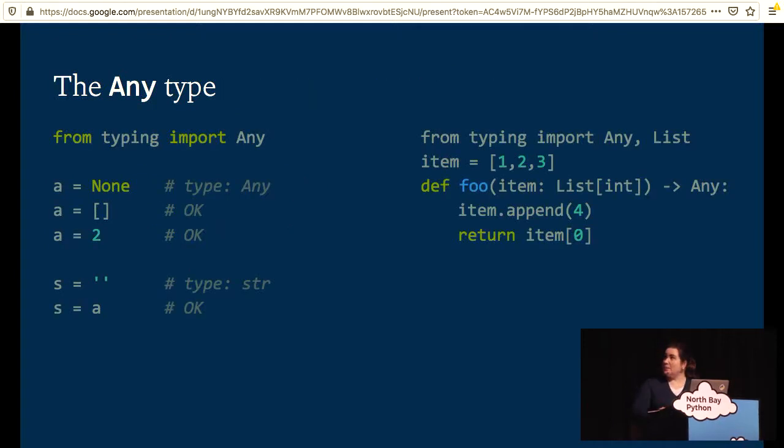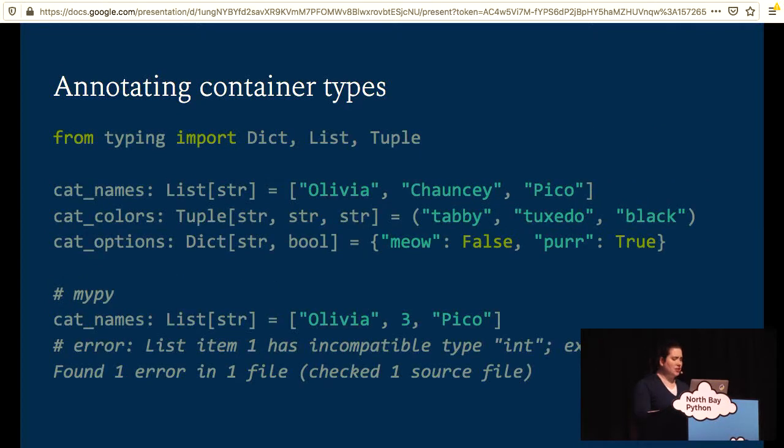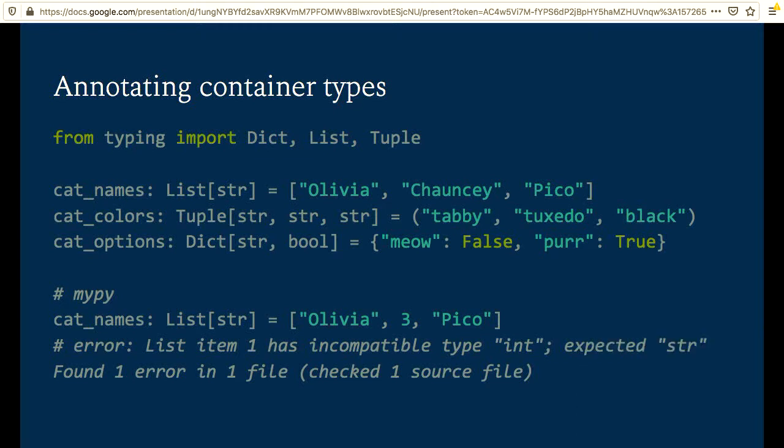The any type allows you to sort of move seamlessly between the statically and dynamically typed parts of your application. Any is compatible with all types, and all types are compatible with it. All method calls and operations can be performed on the any type, and it can be assigned to any variable. And it acts as a gateway between the dynamic and type checked parts of your application. Any functions and variables also that are not annotated default to the any type.